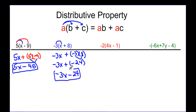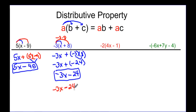Let me show you another approach. You can also think of it as negative three X, and then just multiply negative three times eight directly, which gives you negative 24. So that's another way to look at it — you get the same result: negative three X minus 24.